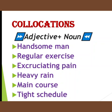Then 'regular exercise'. 'Excruciating pain' — if I say 'big pain' or 'intense pain', that won't make the correct collocation. Excruciating pain means severe pain. 'Heavy rain' — if I say 'big rain', it does not sound natural. Rain always goes with 'heavy'. Then 'main course' — if I change it to 'chief course', even though chief also means main, that combination is not natural. The correct combination is 'main course'. Then 'tight schedule' — if we say 'strong schedule', that is not the correct combination. The actual collocation is 'tight schedule'.